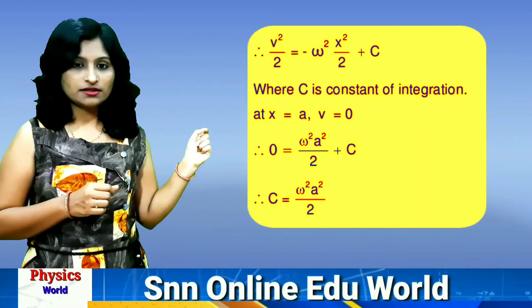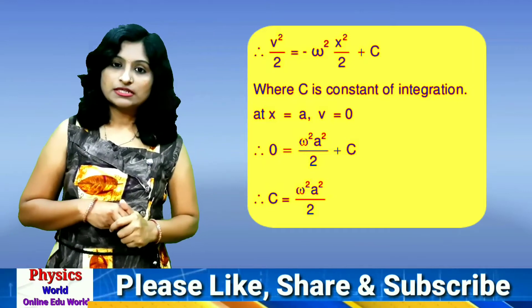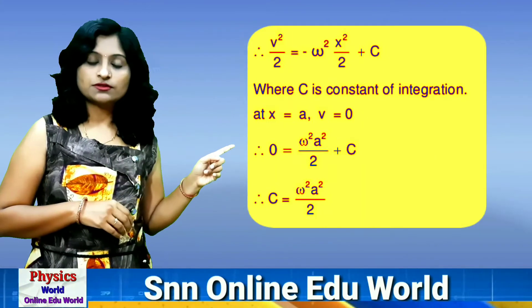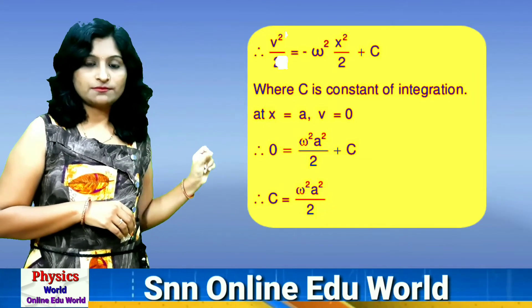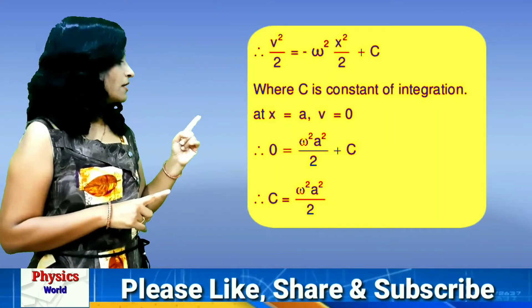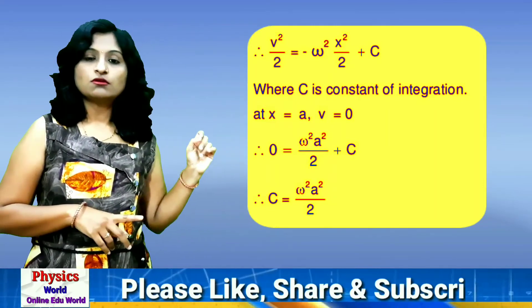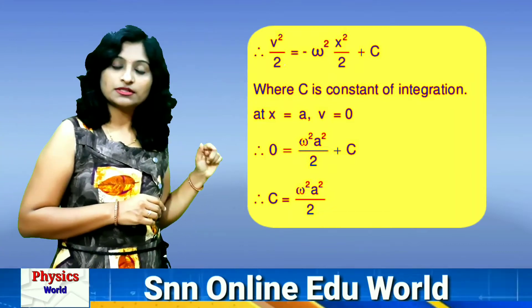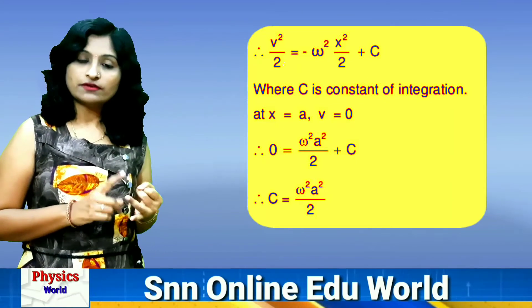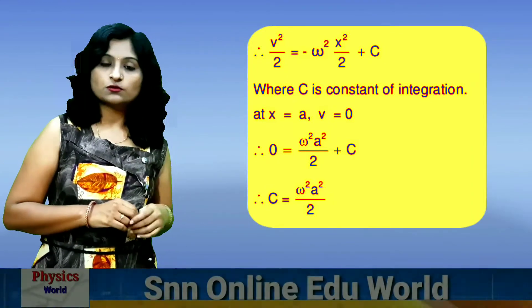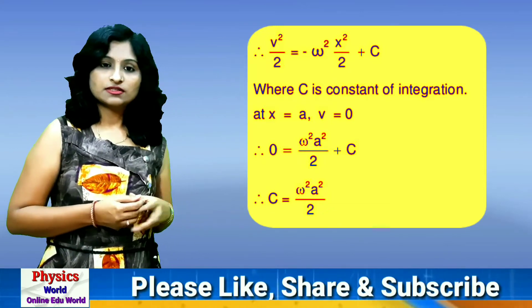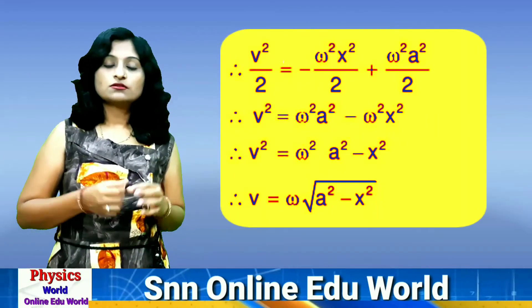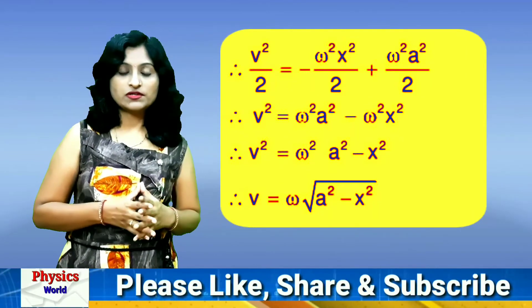We use this condition: if x = A (amplitude), then V = 0. Substituting in the equation: V²/2 = -ω²A²/2 + C. Since V = 0, the LHS is 0. So: 0 = -ω²A²/2 + C. Shifting gives C = ω²A²/2. Substituting this value back: v²/2 = -ω²x²/2 + ω²A²/2. The 2 in the denominator cancels throughout.